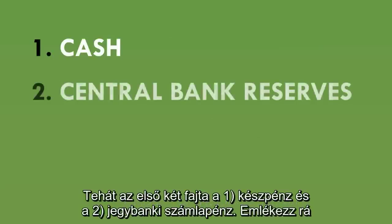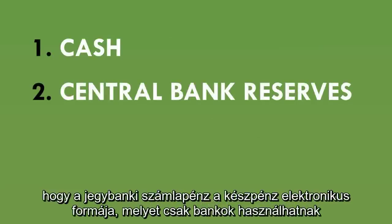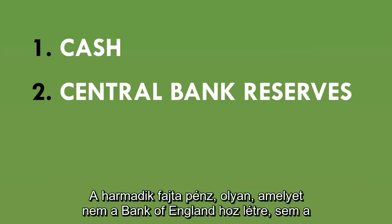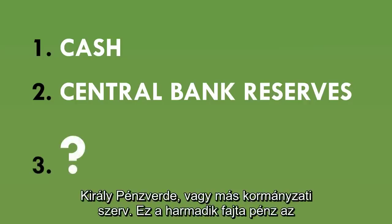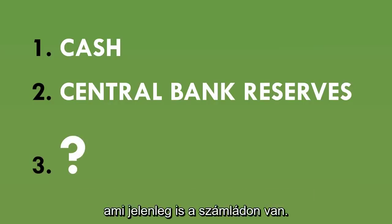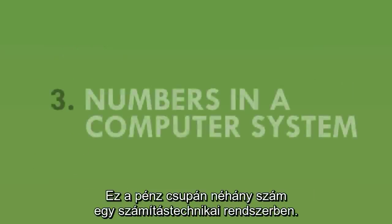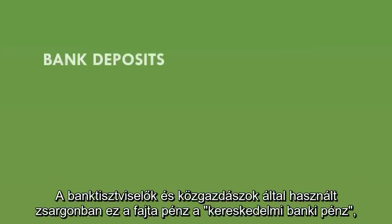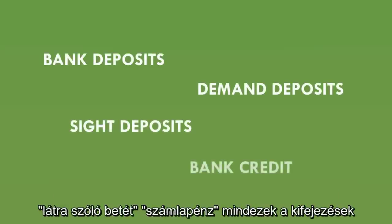So the first two types of money are: one, cash; and two, central bank reserves. Remember that central bank reserves are like an electronic version of cash that only the banks can use to make payments between themselves. The third type of money is a type that isn't created by the Bank of England, the Royal Mint, or any other part of government. This third type is the money that's in your bank account right now — just numbers in a computer system. Bankers and economists refer to this type with jargon such as bank deposits, demand deposits, sight deposits, or bank credit.